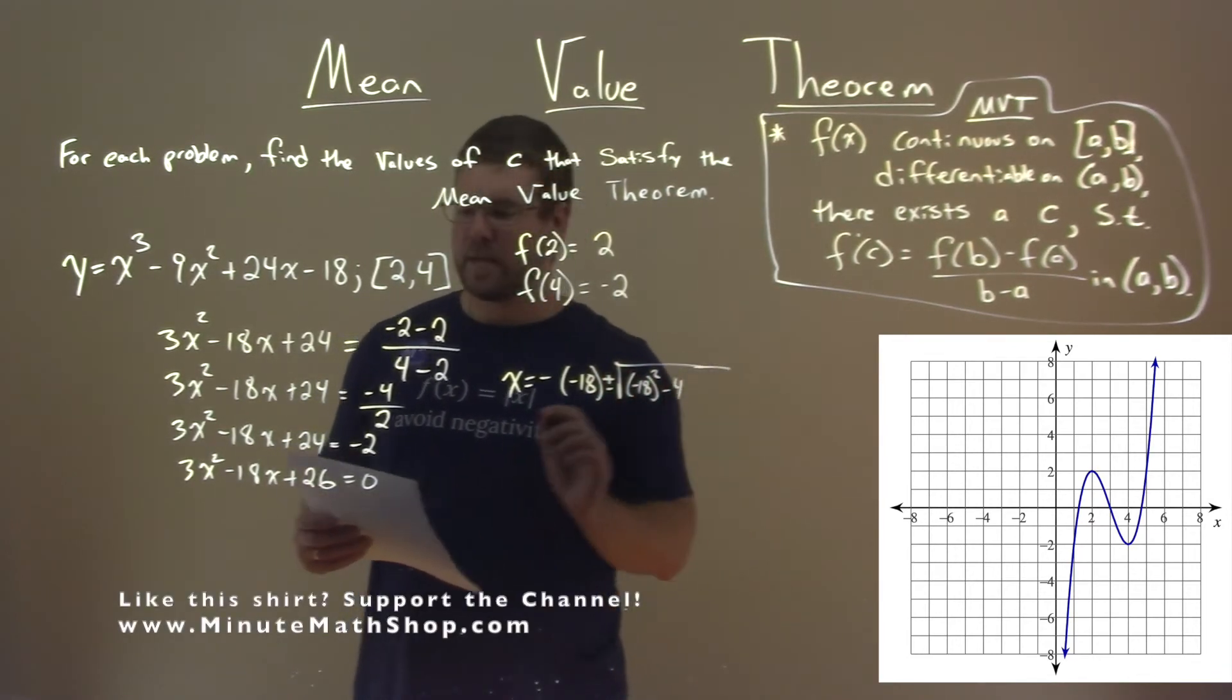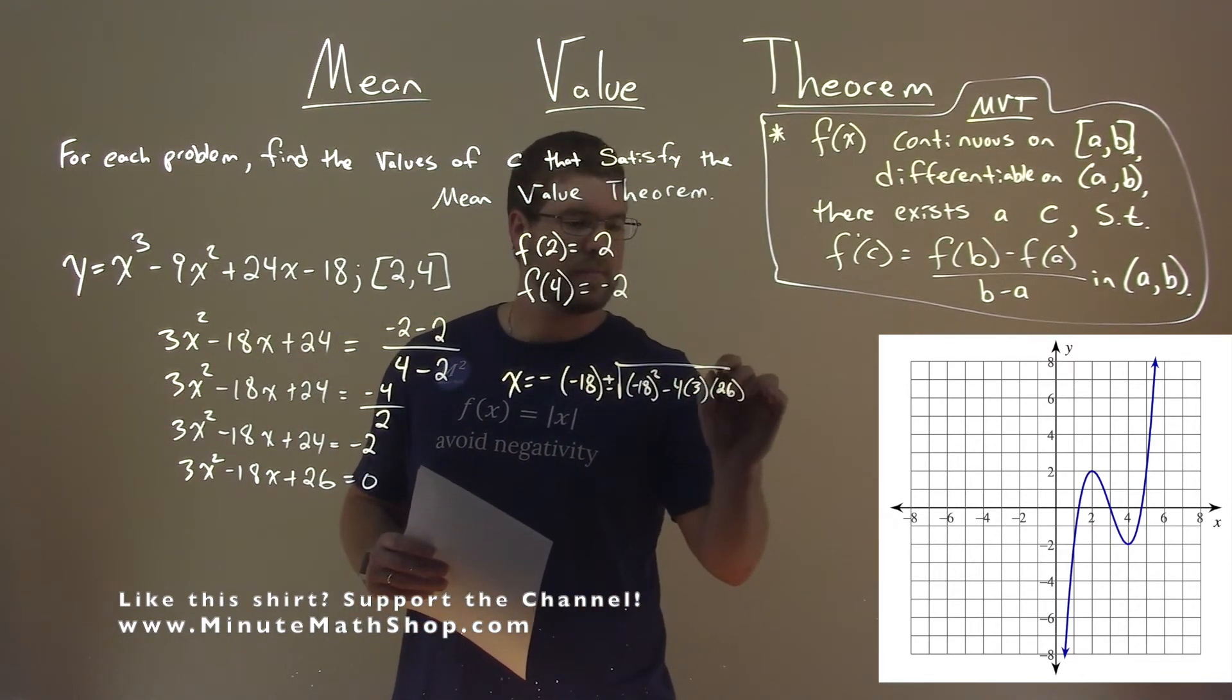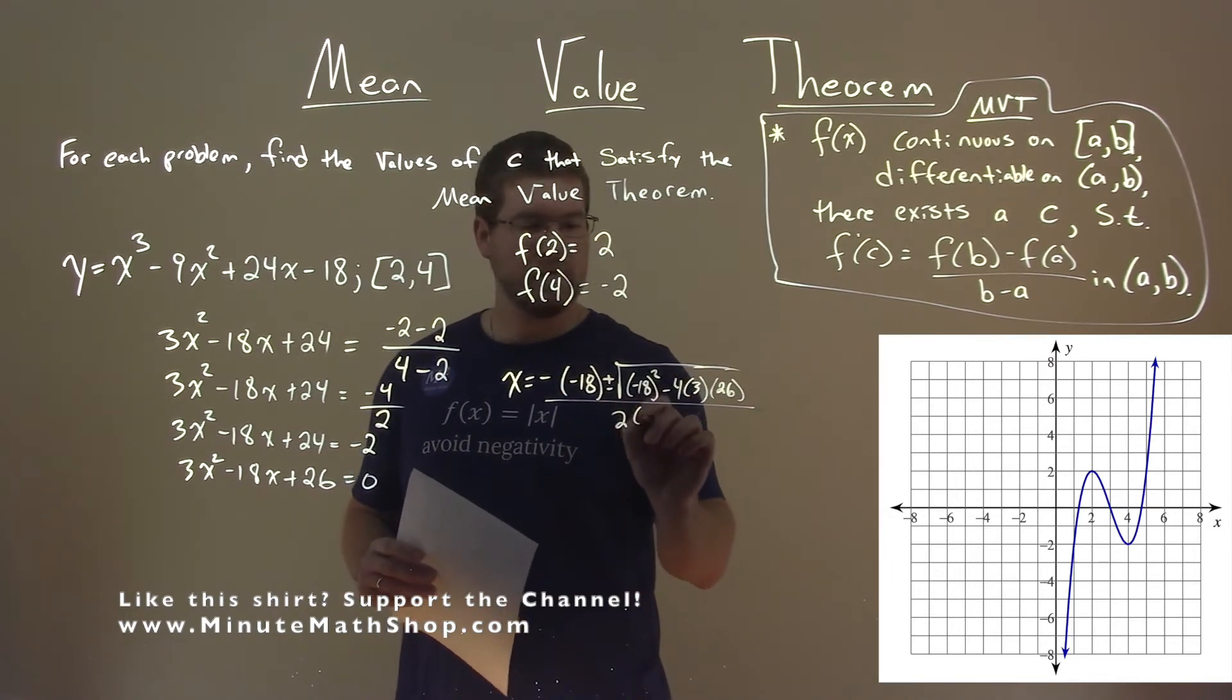minus 4 times our a value, which is 3, times our c value, which is 26, all over 2 times a, 2 times 3.